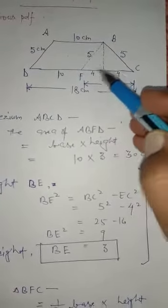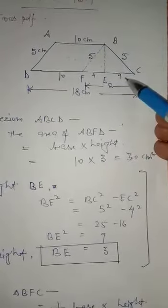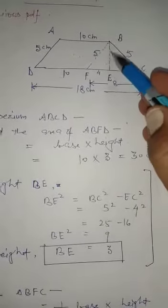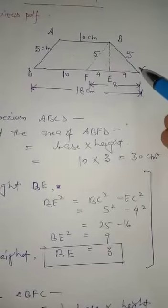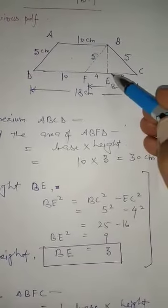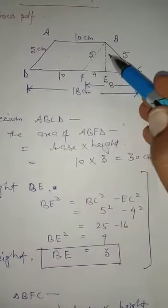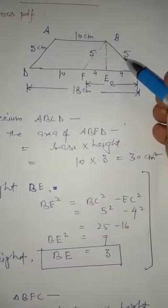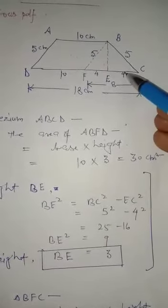If we talk about triangle BCE, this is hypotenuse. It's base and height. According to Pythagorean theorem, hypotenuse square equals base square plus perpendicular square.